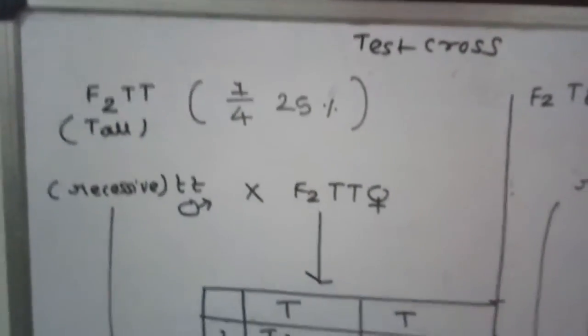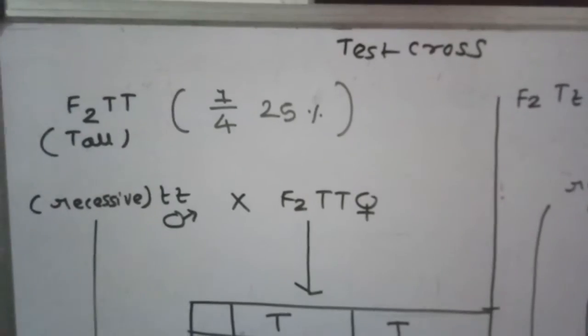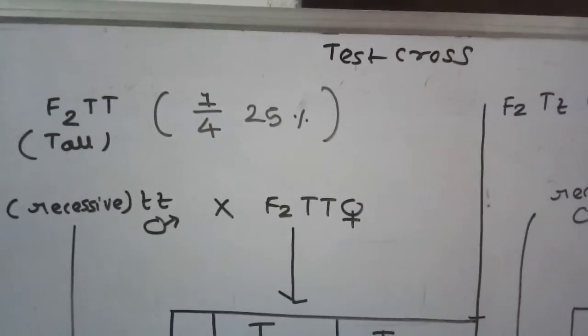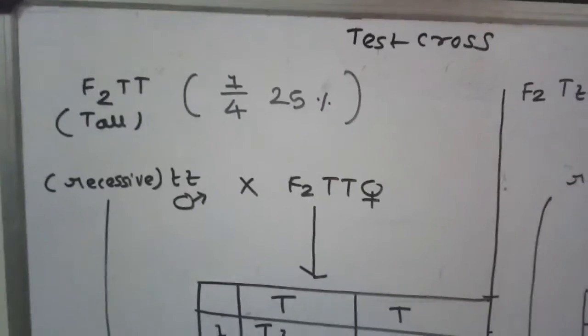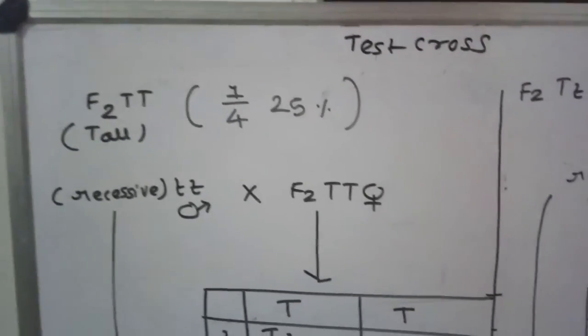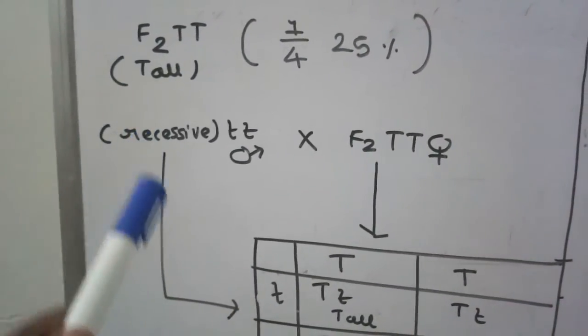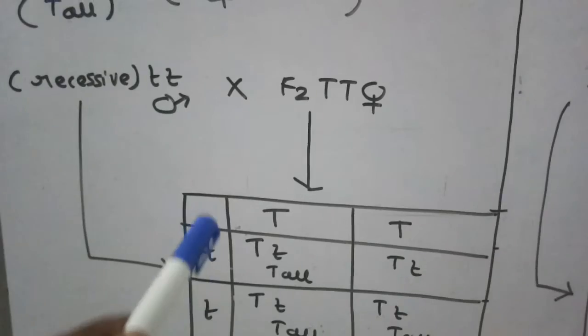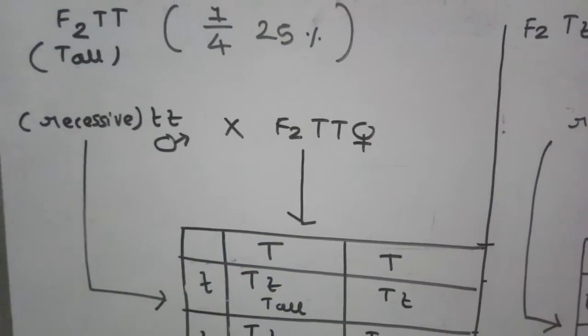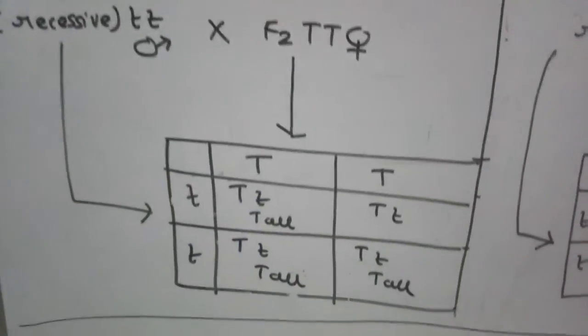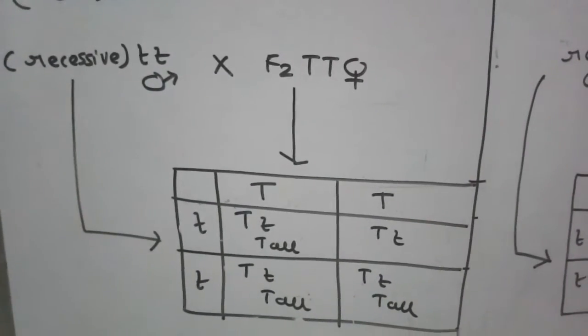If the F2 is homozygous tall, capital T capital T, crossed with small t small t recessive plant, the recessive plant produces gametes with small t only. If small t pollen grain fertilizes capital T egg cell, the ultimate genotype will be capital T small t. If the F2 is homozygous dominant in the test cross...